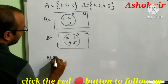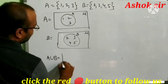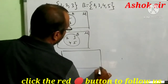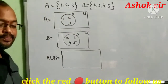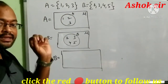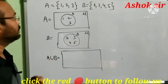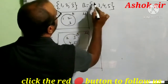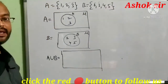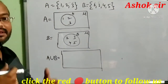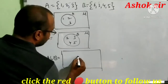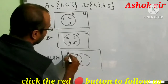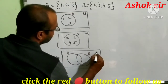Now A union B. Whenever we want to represent A union B, we first check whether there are common elements in the two sets. Elements 2 and 3 are common, so one circle overlaps the other. This is set A, this is set B, and this is the universal set.